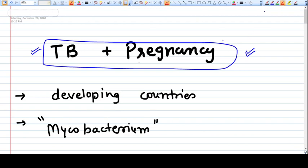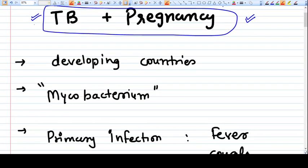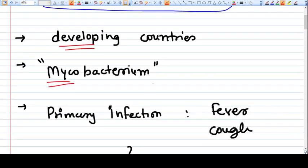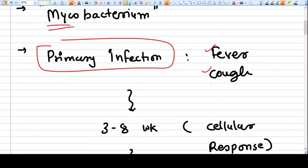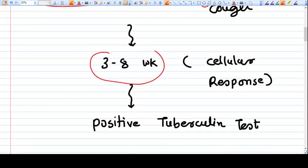This is going to be a very important video for you. TB is a disease of developing countries. The mycobacterium bacteria is the causative factor. Primary infection will give fever and cough.